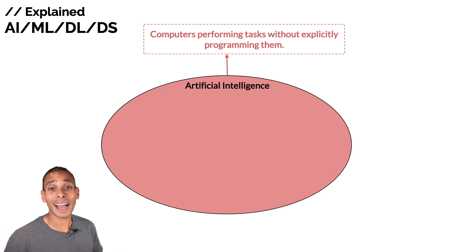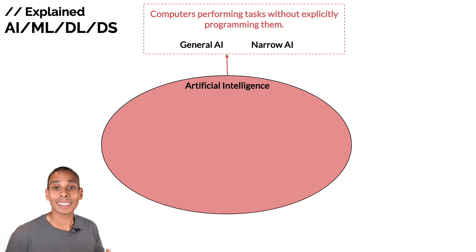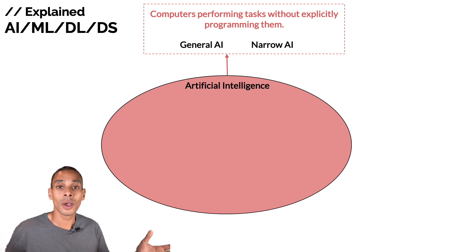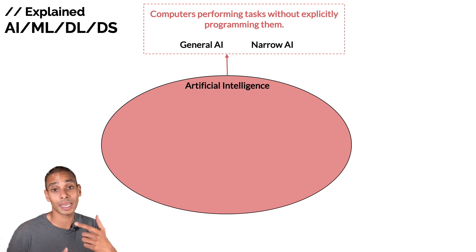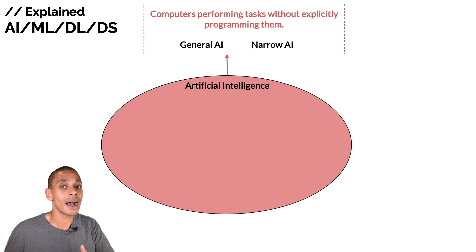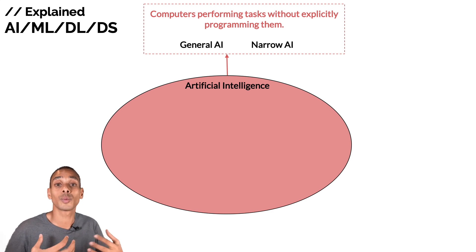We typically break AI out into two key categories: general AI and narrow AI. General AI refers to the ability for a computer or machine to handle a wide variety of tasks. Us as humans have the ability to do a whole range of things — we can see, speak, hear, read, drive. The ability for AI to do a broad range of tasks similar to humans is what we refer to as general AI.